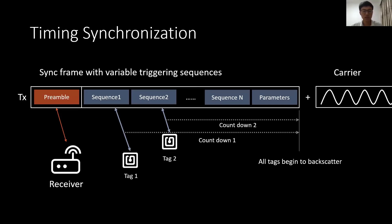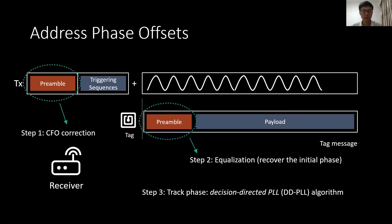There are also commonly shared problems in all OFDMA systems that we need to address. First is timing synchronization: in DigiScatter, we synchronize all tags via the transmitter, which sends a series of triggering sequences modulated by OOK. We use a multiple triggering scheme to increase the chance of successful triggering and allow more tags to work simultaneously. Another problem is phase offsets. In DigiScatter, we follow a three-step procedure: Step 1 is CFO correction, Step 2 is equalization which also recovers the initial phase of each tag, and Step 3 uses a decision-directed PLL algorithm for decoding.